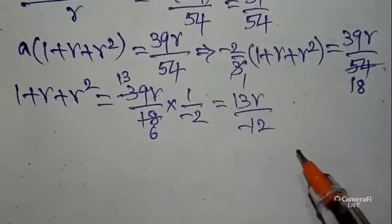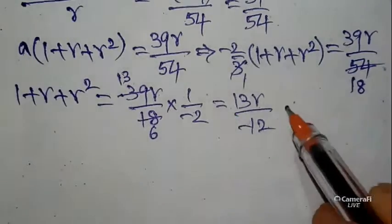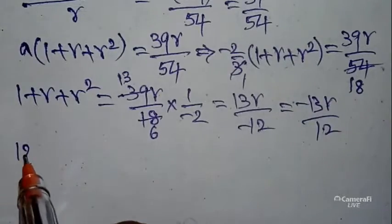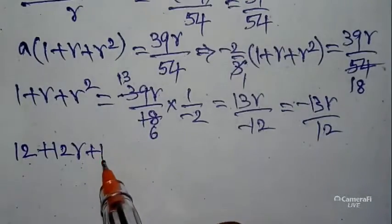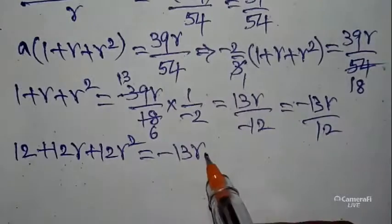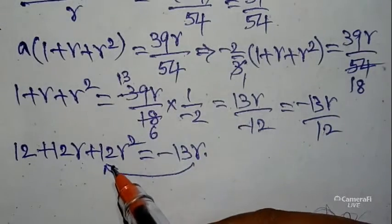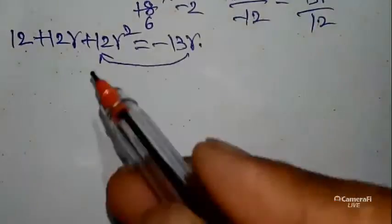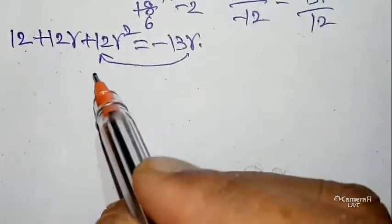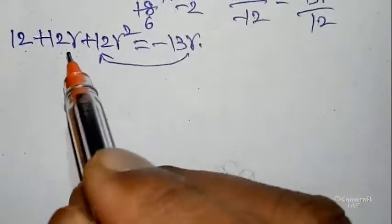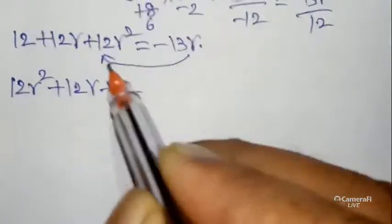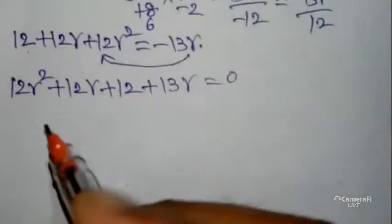Cross multiply: 12 comes into this side, multiplying the left side values. 12 × 1 = 12, 12 × r = 12r, 12 × r² = 12r². So we get: 12 + 12r + 12r² = −13r. Bringing −13r to the left side gives: 12r² + 12r + 13r + 12 = 0.